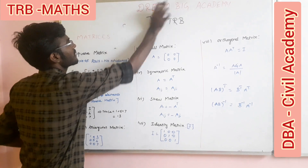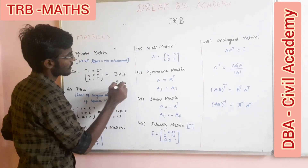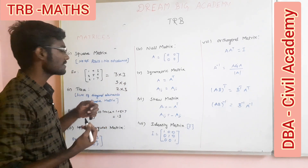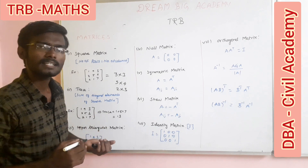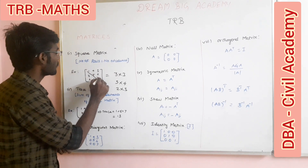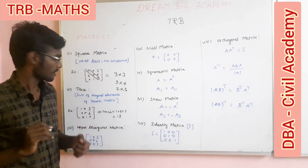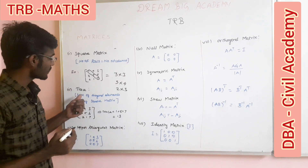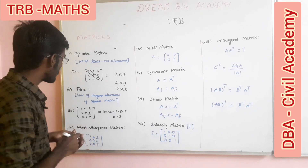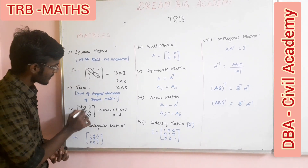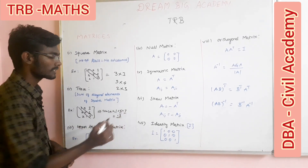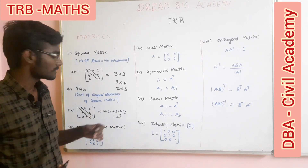If you have a rectangular matrix, it can be something like 3x4 or 2x3, where rows and columns are not equal. Next is Trace. If you have a matrix, you can identify the main diagonal. The trace is the sum of the diagonal elements of that matrix.